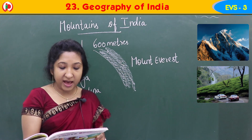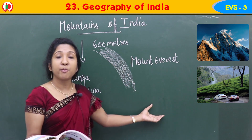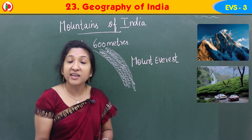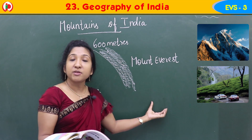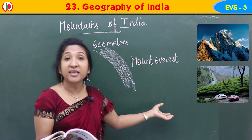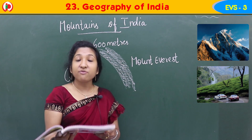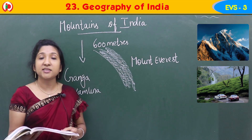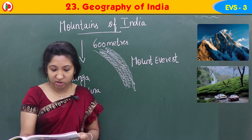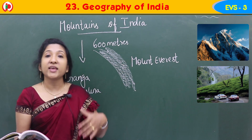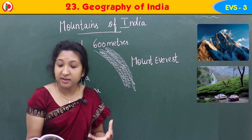In south India there are Nilgiri hills, and in central India there are Satpura and Vindhya ranges. The southern part of India includes Tamil Nadu, Kerala, Karnataka, and Andhra — the Nilgiri hills can be seen in Tamil Nadu state. In central India you can see the Vindhya and Satpura ranges. These are the low mountain ranges — like hills. So that is about mountains of India.